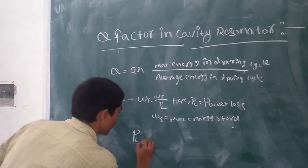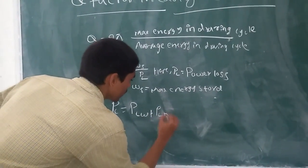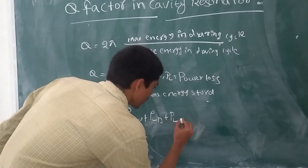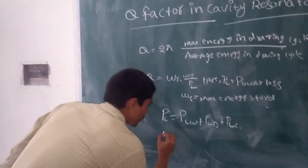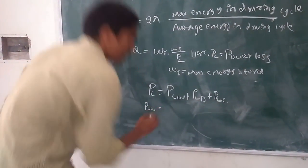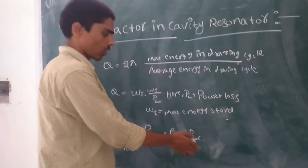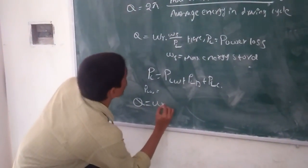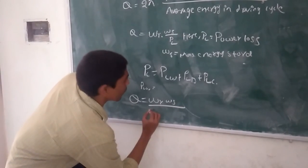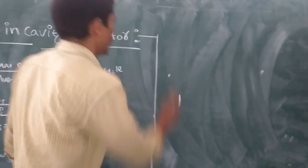Power loss is equal to power loss due to wall plus power loss due to dielectric. This is omega r into omega s by power loss due to wall plus power loss due to dielectric plus power loss due to coupling when Q is loaded.